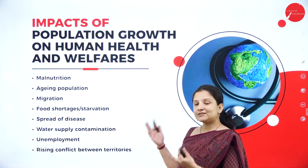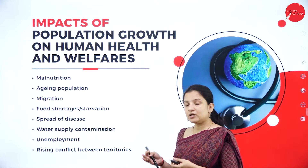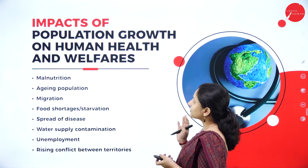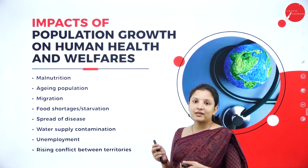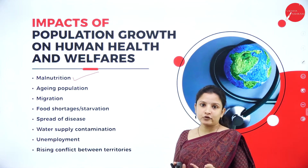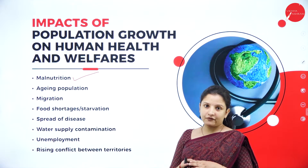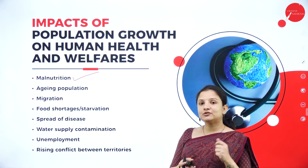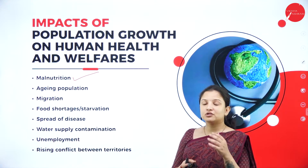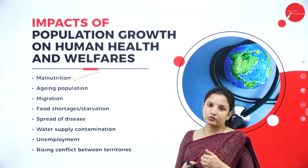So those were the impacts of population growth on the environment. Now, what will happen to human beings if we don't control the population? Let's study the impacts of population growth on human health and human welfare. First, it will lead to malnutrition. With too large a population and less agricultural land, there won't be enough place to grow food. Less food production will not be able to meet the demands of the people, therefore leading to malnutrition.